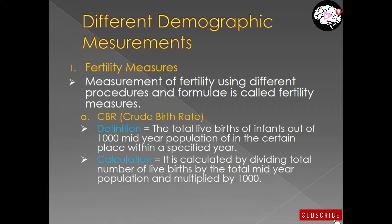Welcome to this class. Last time we talked about different demographic measurements — five demographic measurements: fertility measures, mortality measures, migration measures, and other measures. Today we will read about fertility measures. There are four fertility measures: CBR (Crude Birth Rate), GFR (General Fertility Rate), ASFR (Age-Specific Fertility Rate), and TFR (Total Fertility Rate).